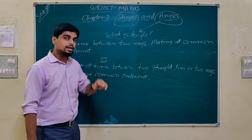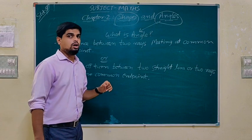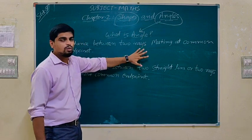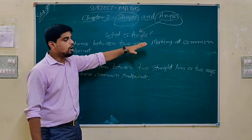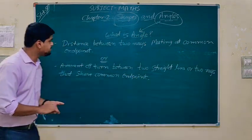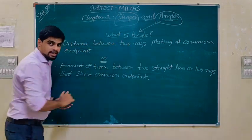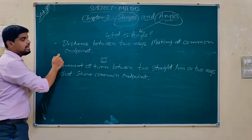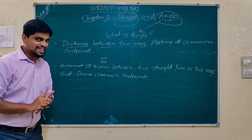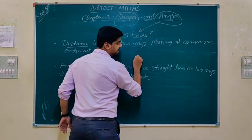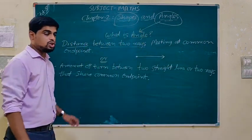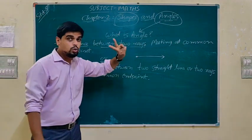First question: what is an angle? Have you heard the word angle? If yes, comment down below. Otherwise, we will learn in this video what an angle is and what the different parts of an angle are. So, the angle is the distance between two rays. We have already studied that a ray has one end point and it extends in one direction.